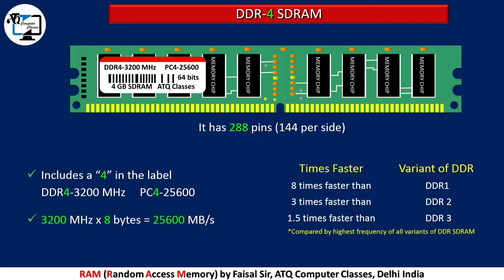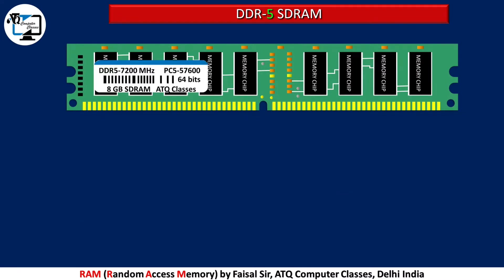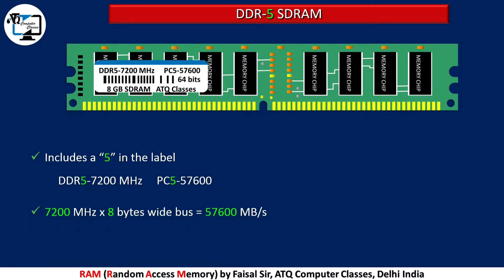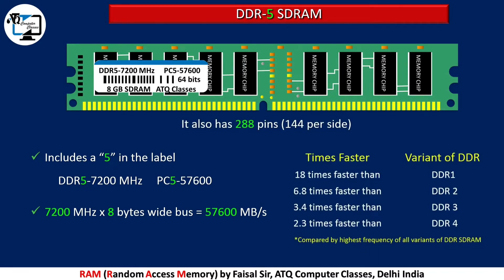DDR5 includes a 5 in the label. The maximum speed of DDR5 is 57,600 megabytes per second. It also has 288 pins. It is 18 times faster than DDR1, 6.8 times faster than DDR2.